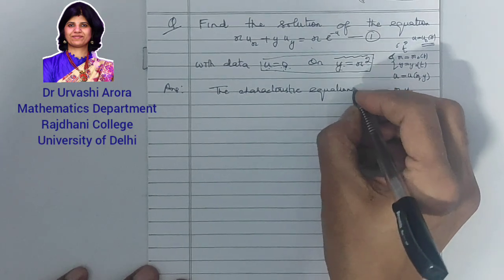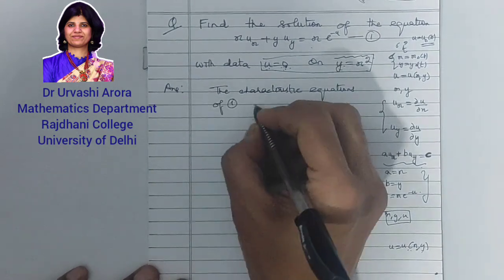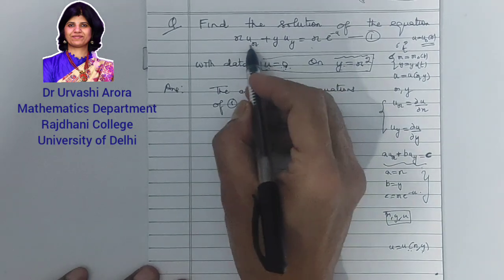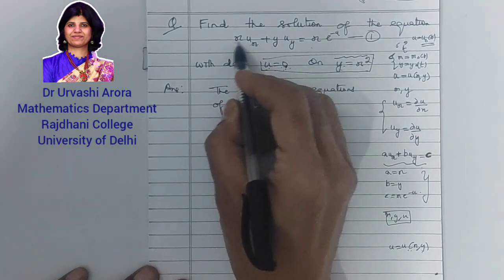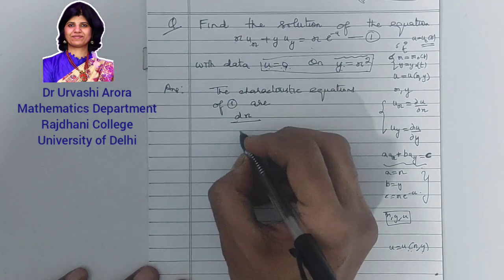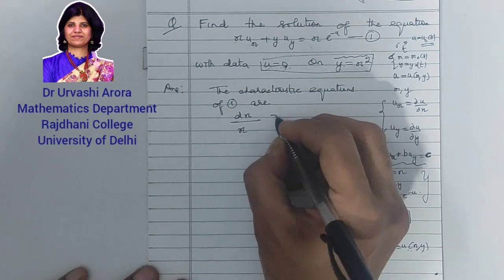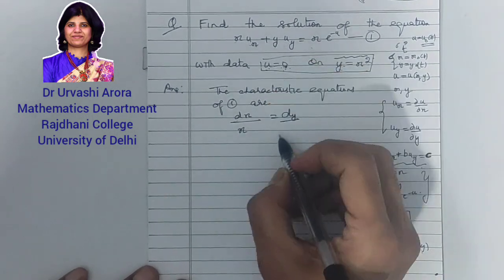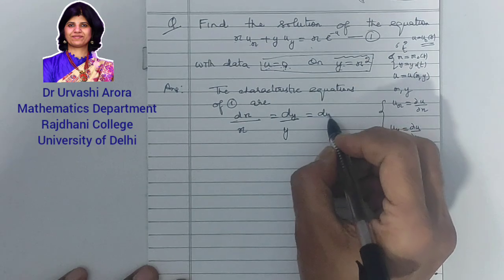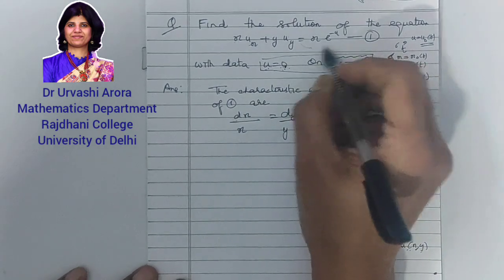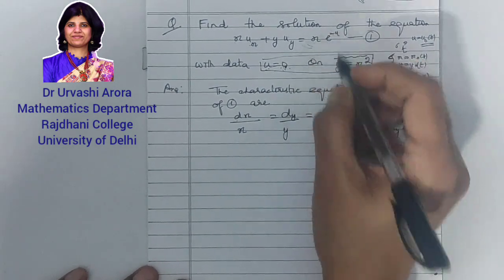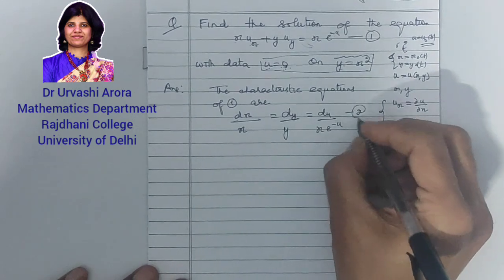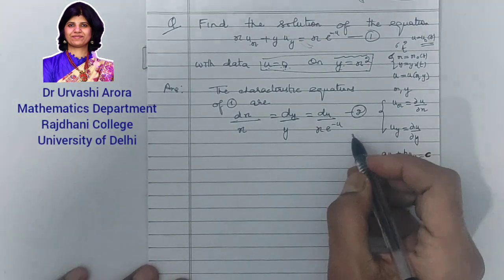The characteristic equations of equation 1 are: dx/a = dy/b = du/c, where a is the coefficient of u_x (which is x), b is the coefficient of u_y (which is y), and c is the right-hand side (which is x·e^(-u)). So the characteristic equations are: dx/x = dy/y = du/(x·e^(-u)). Let me mark these as equation 2.